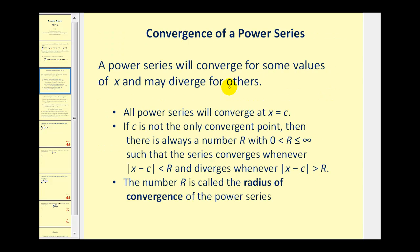A power series will converge for some values of x and may diverge for others. Our main goal for this video is to determine the interval for which the series converges. All power series will converge at x equals c where it's centered. If c is not the only convergent point, then there is always a number r, often called the radius, greater than zero or less than or equal to infinity, such that the series converges when the distance between x and c is less than r, and diverges when that distance is greater than r. This number r is called the radius of convergence.